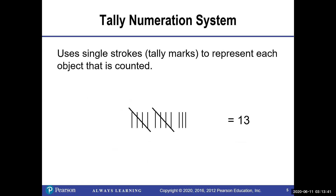The tally numeration system uses single strokes to represent each object that is counted, and this is used a lot in statistics. You do one stroke, two strokes, three strokes, four, and then the last one goes through — making five. So here we have five, five, and three, which together gives us 13.